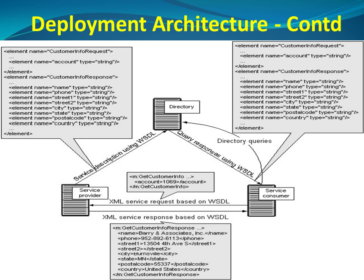WSDL shows the following information. The endpoint URL is used by the client to access the service. Data elements needed to send as input parameters to the web service are shown in customer information. WSDL is shown in customer info response. Messages at the bottom part of the diagram show SOAP XML messages exchanged between the consumer and the provider.